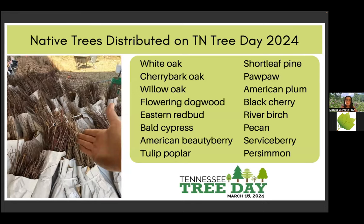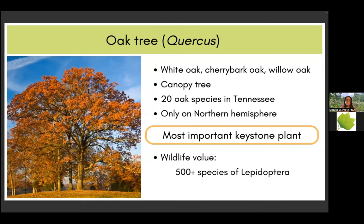Another way to support pollinators is to take part in Tennessee Tree Day. This is the list of trees we are distributing this year. I would like to start right away with the number one keystone species we're having on Tree Day — the oak trees. Oak trees are the most important pollinator plants and keystone plants of North America, simply because they support more than 500 Lepidoptera species. This year we will have white oak, cherrybark oak, and willow oak on Tennessee Tree Day.